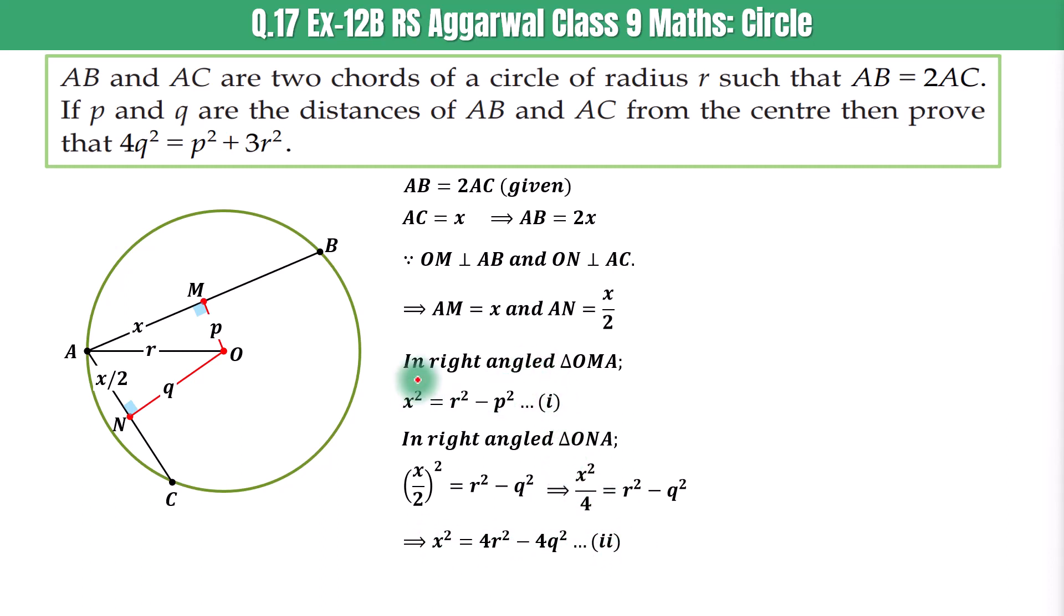Substituting the value of X squared from equation 1 into equation 2, we get R squared minus P squared is equal to 4R squared minus 4Q squared. Moving negative 4Q squared on left hand side, we get 4Q squared is equal to 4R squared minus R squared plus P squared.